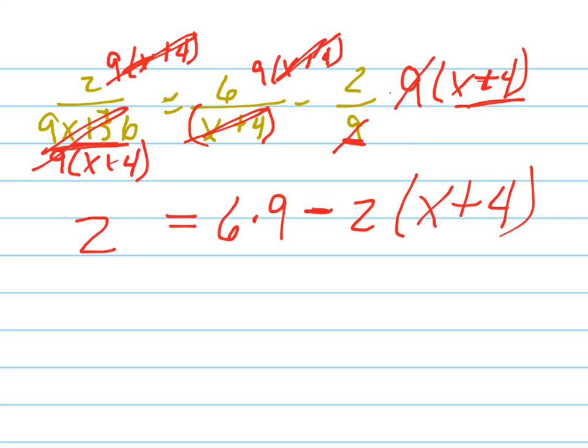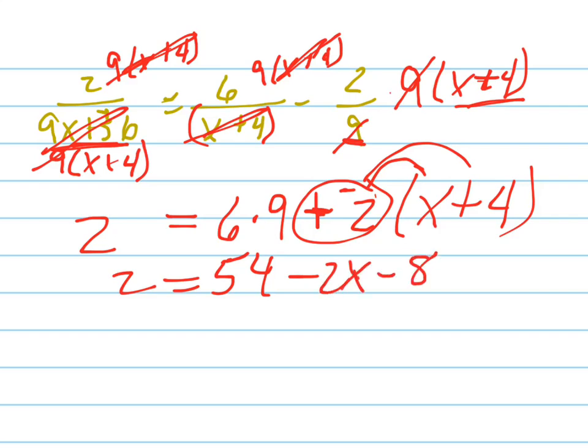And now it's just a simple linear equation, of course. People can still make silly mistakes here. So 9 times 6 is 54. Don't forget to distribute the negative 2 in here. I like to do that. I make it plus a negative 2 so that I remember to distribute it into both of them. So that's minus 2x minus 8. Now I can add things together. So this is 54 minus 8 is 46 minus 2x.